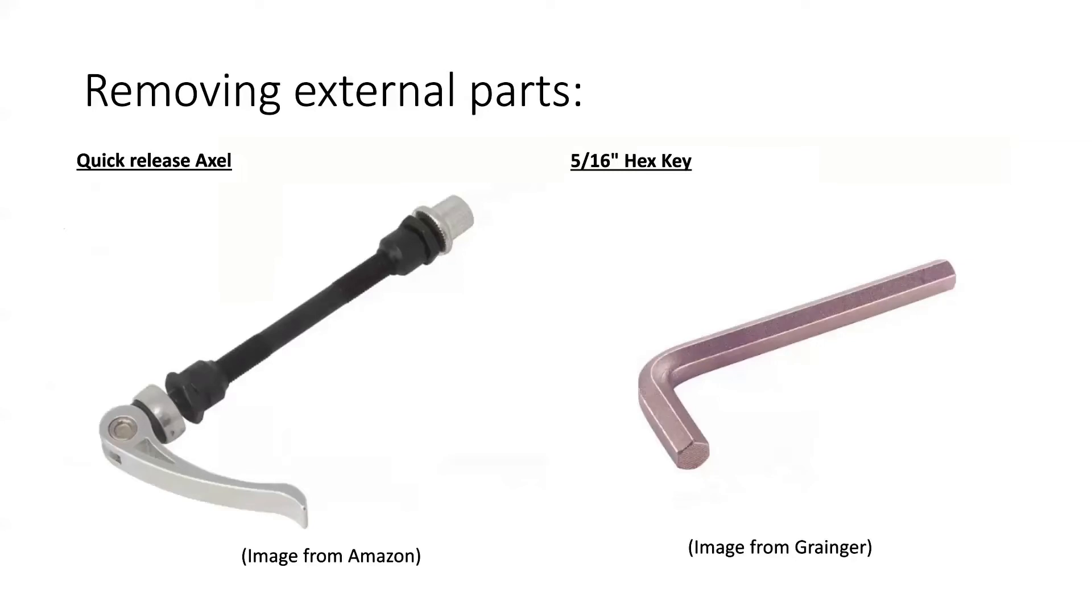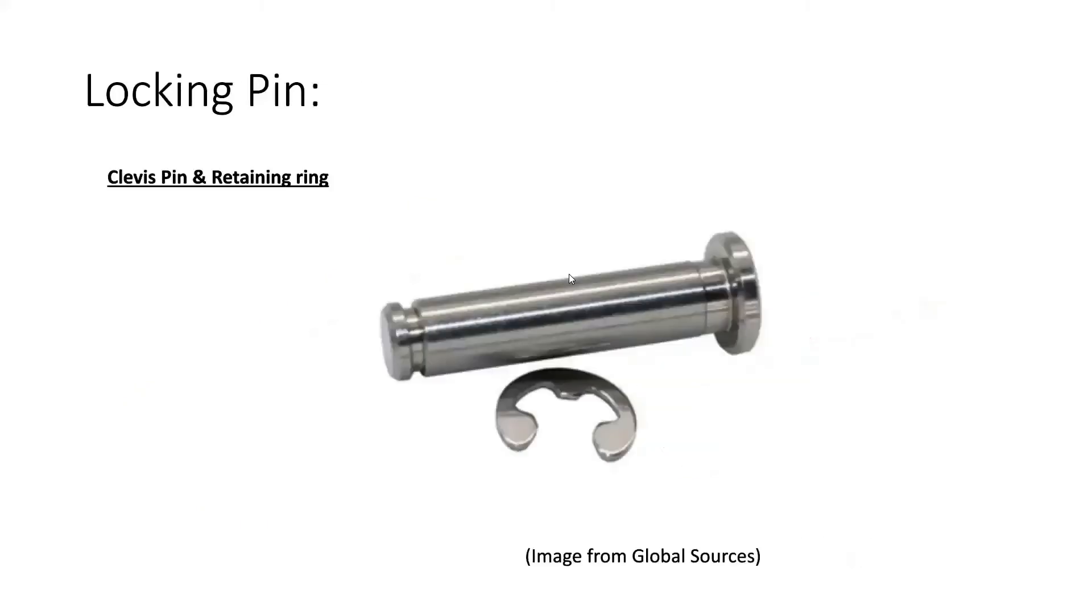The quick release axle is something that many bicycles already have as a standard part. So it's going to be very common already. And basically what it is, is an axle that you can pull on this lever here to take off both the front and the back wheel. So that'll make that very easy. You can just take the front wheel and the back wheel and set them aside and then we can move on to taking off the handlebar with a 5/16 hex key. It makes it super easy to just remove the handlebar and set that to the side.